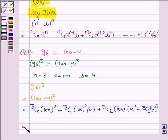³C₀ is 1, so the first term is (100)³ which equals 1,000,000. ³C₁ is 3, so the second term is 3 times (100)² times 4, which is 120,000. ³C₂ is 3.